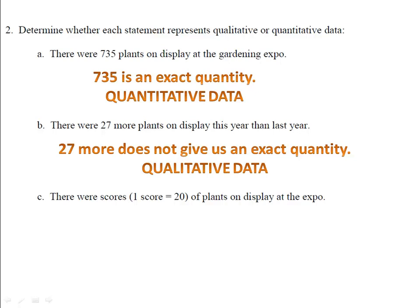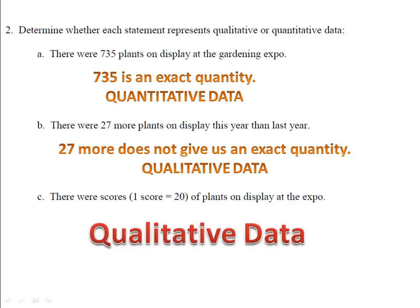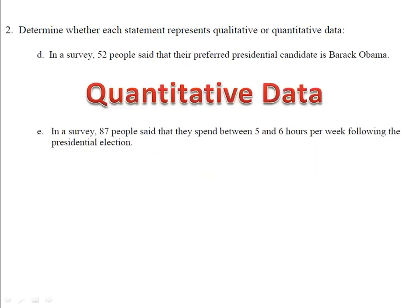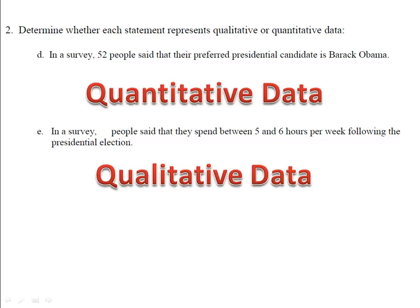Examples C, D, and E are for you to try. Part C: there were scores of plants on display at the Expo. We know that one score is 20, but we don't know how many scores of plants there were — we just have a description. This is qualitative data. In a survey, 52 people said their preferred presidential candidate is Barack Obama. 52 is an exact quantity, so we have quantitative data. Finally, people said they spend between 5 and 6 hours each week following presidential elections. Because we only have a description of the amount of time, and not an exact quantity, we have qualitative data.